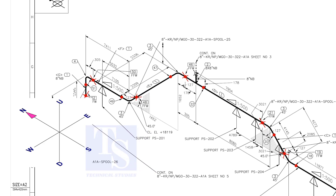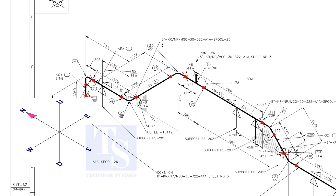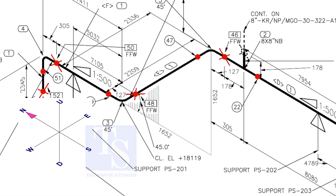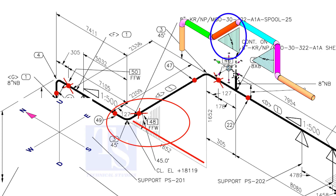Here, the pipe comes up and goes to the south direction. What is this vertical shade? This vertical shade means that as the pipe goes in the south direction, the pipe goes in the up direction also.